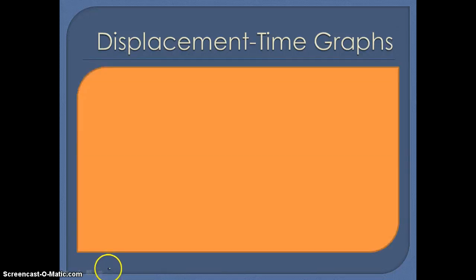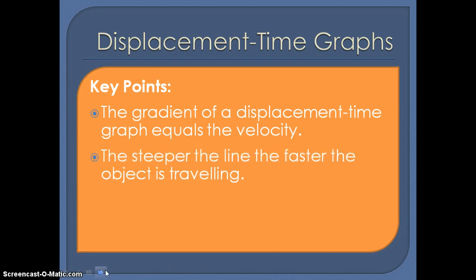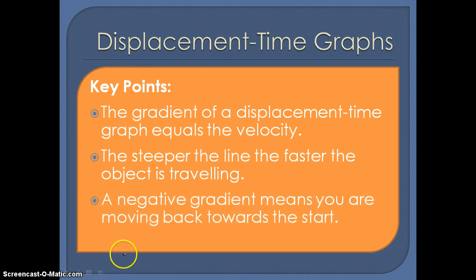The key points to know for displacement-time graphs: the gradient of a displacement-time graph equals the velocity. The steeper the line, the faster the object is travelling. And if you have a negative gradient, that means you're moving back towards the start.